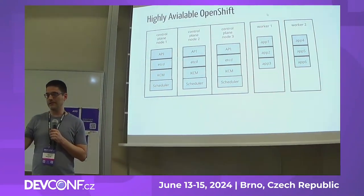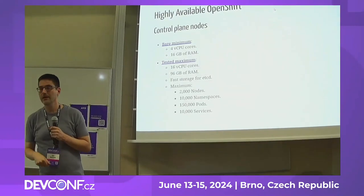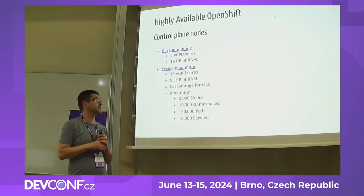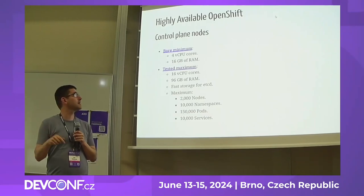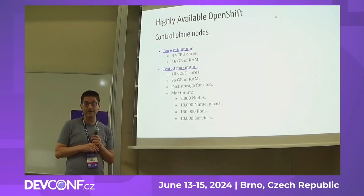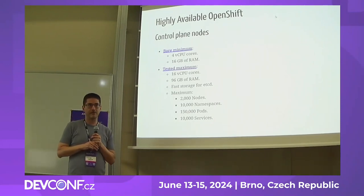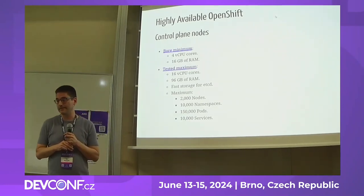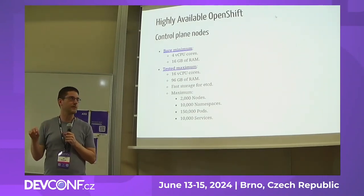The applications you run on top of OpenShift run on separate nodes. The minimum requirement for this configuration is three machines, each with at least 4 CPUs and 16 gigabytes of memory — that's pretty small. We test the maximums, and these are links to actual documentation because it's not easy to scale out. We test with 2,000 nodes and 150,000 pods. For that, we need 16 CPUs on each node, 96 gigabytes of memory, and really fast storage for etcd — that's usually the limiting factor.